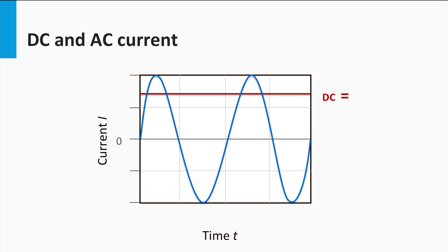AC, or alternating current, on the other hand, is the flow of electric charge such that it constantly reverses directions. The usable form of an AC power is a sine wave. As a thought, DC signals can be looked upon as a signal with zero frequency.